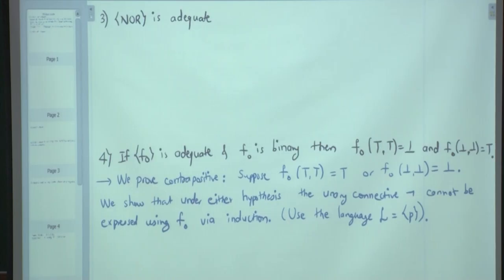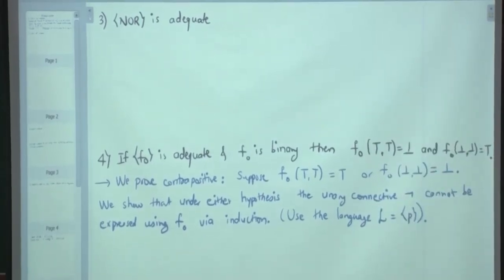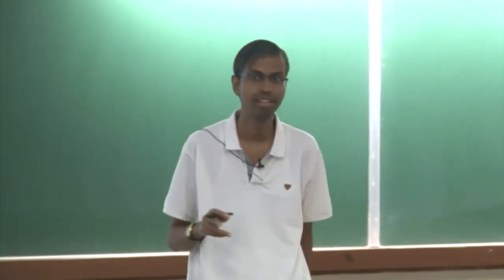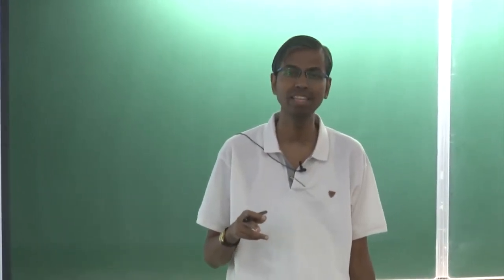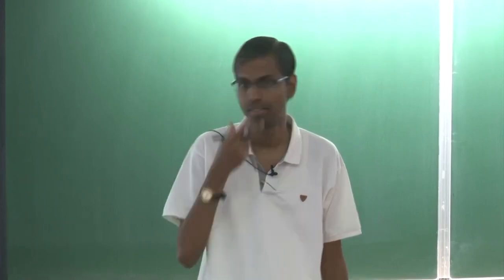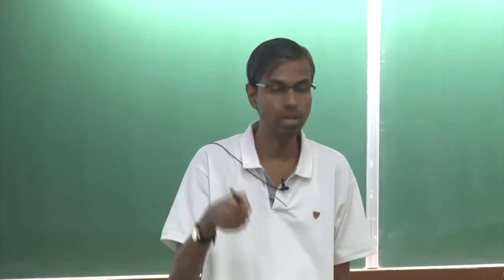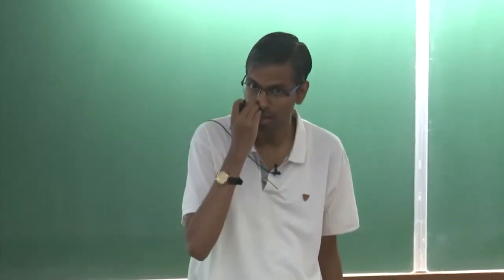Now, all of you should be able to tell me the solution: how do you obtain negation using NOR? P NOR P is negation. And what is conjunction? P NOR Q — NOR (P NOR Q) — that would be disjunction. So if you want to show something is adequate, you have to express negation and conjunction, or negation and disjunction.